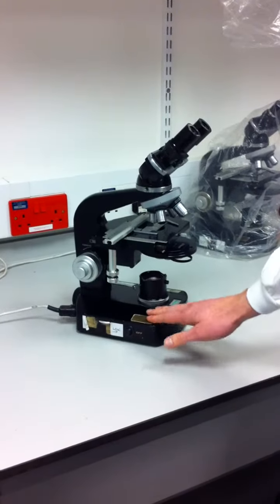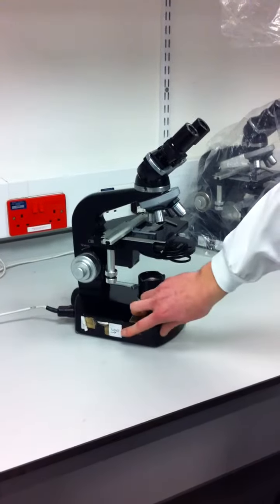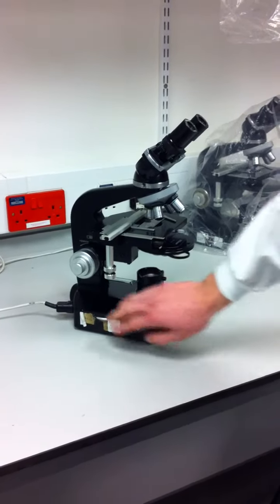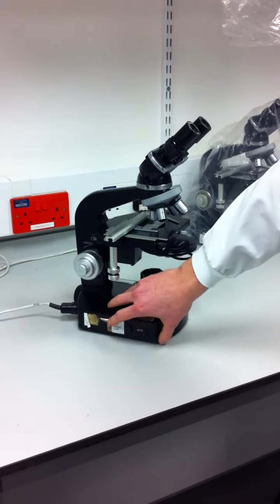This is the base of the microscope. Here's where the light path comes through, and you switch that on and off here. You adjust the intensity of the light using this screw here.